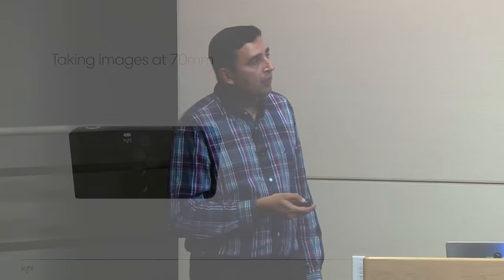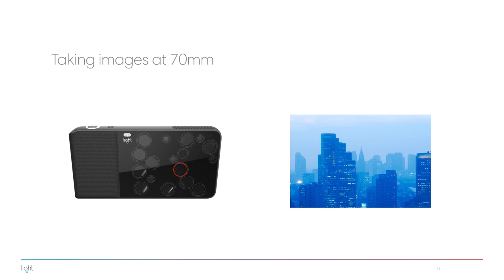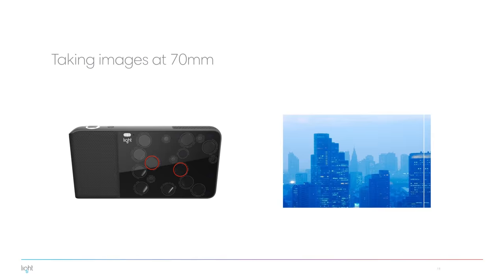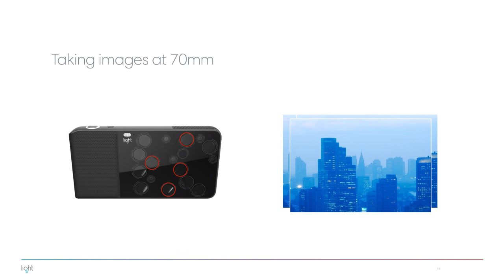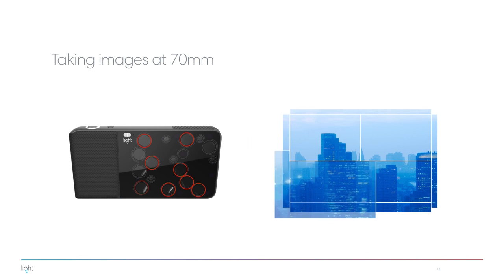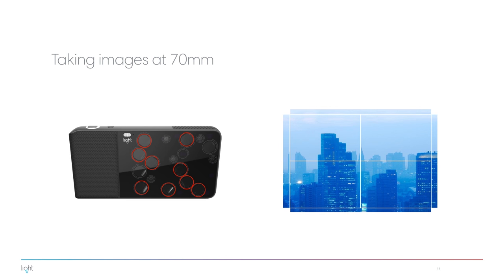To take images at 70mm, we move the mirrors again so the 70mm modules all point straight out and all capture the same field of view — the five of them capture the same 70mm field of view. We also move the mirrors on the 150mm modules to tile the 70mm field of view. We can then combine all of these pictures together into one very high-resolution picture.